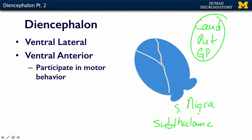All of this circuitry participates in a circuit with the VA and the VL. The VA and the VL participate in this basal ganglia circuitry with the motor cortex to regulate your motor behaviors.